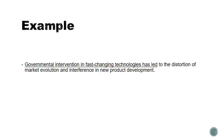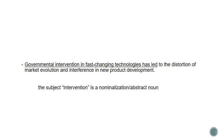Here's an example: 'Governmental intervention in fast-changing technologies has led to the distortion of market evolution and interference in new product development.' Very impersonal, very indirect, and pretty unclear as to what exactly is happening and by whom. If we look at the first seven or eight words — 'governmental intervention in fast-changing technologies has led' — the subject is 'intervention' or 'governmental intervention,' which is a nominalization and an abstract noun. Also, 'governmental' is an adjective made from the noun 'government,' which is itself a nominalization of the verb 'govern' — a sort of double abstraction.